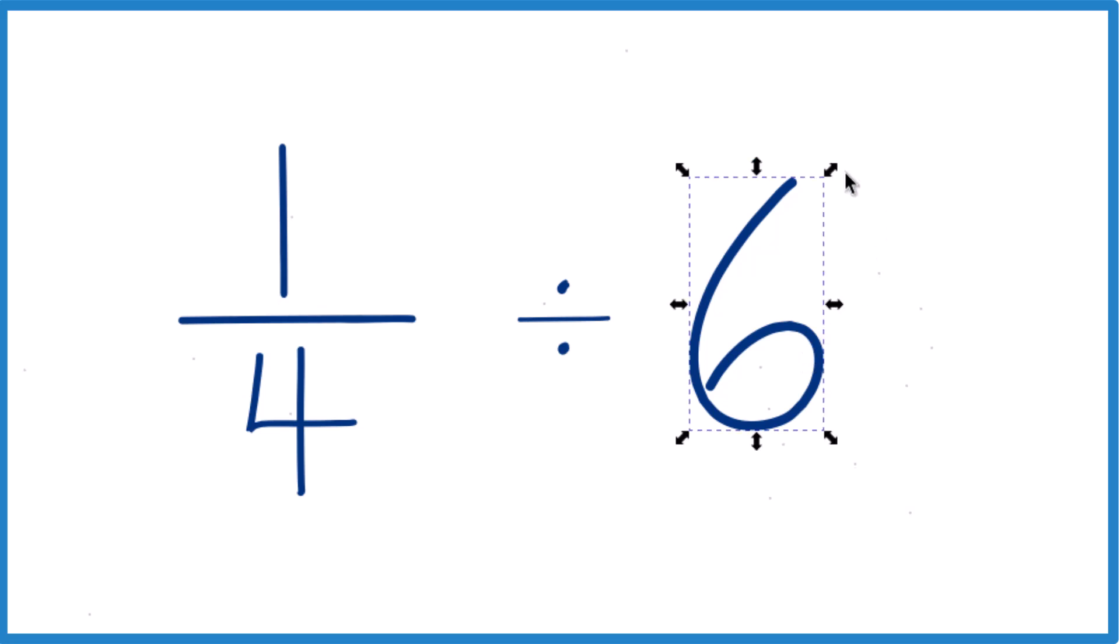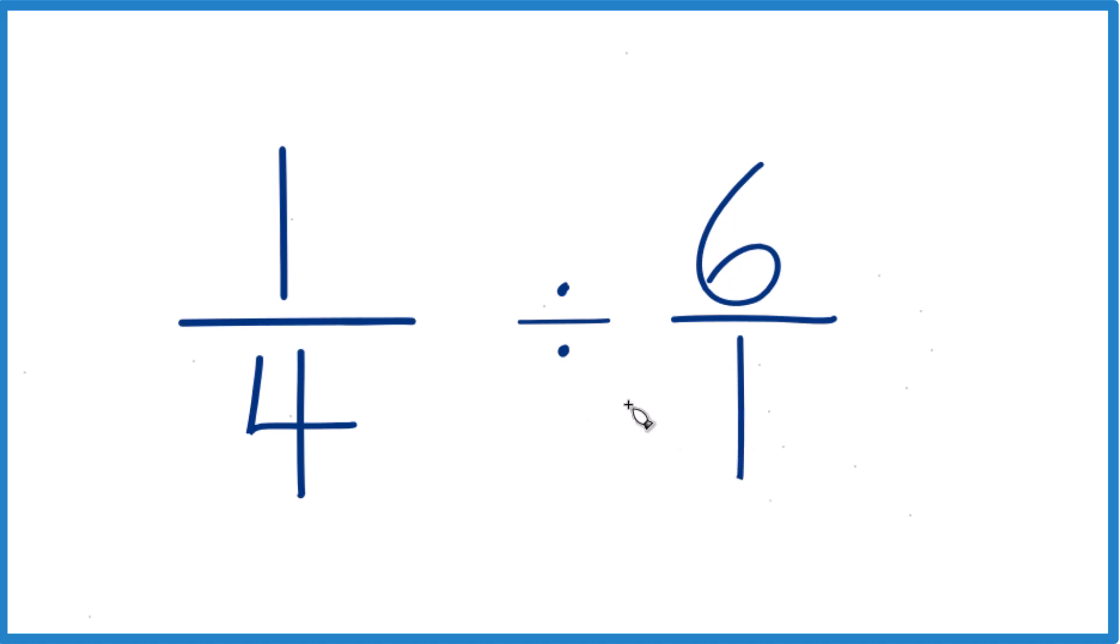Then for the 6, let's call this 6 over 1. Because 6 divided by 1, it's still 6. We haven't changed the value. It's just written a little bit differently, and it's easier to line things up.